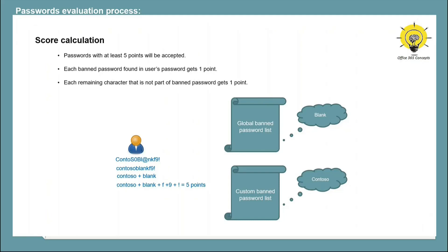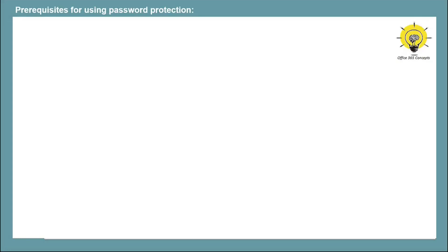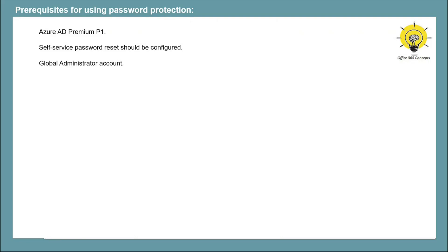Now let's understand the prerequisites required for using the password protection feature in Azure Active Directory. To configure the custom banned password list, you need an Azure AD Premium P1 license. Self-service password reset should be enabled in your tenant so that you can test the password change operation using a banned password. And you need an account with global administrator privileges. Let's move to the lab and I'll show you how to configure and test the banned password list in Azure Active Directory.